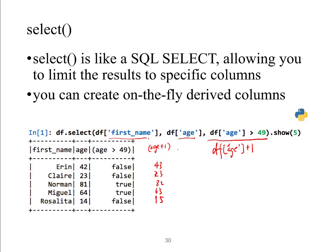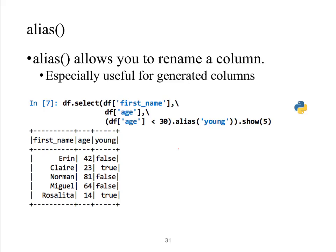For example, you can give an alias 'young' to an on-the-fly generated column, and you would see the column name replaced by 'young'.